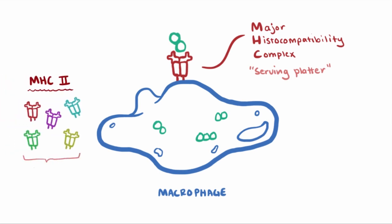Now, there are a ton of different types of MHC class II serving platters, and these serving platters are encoded by genes called human leukocyte antigen genes, or HLA genes. And these genes determine what things the MHC class II molecules serve up.